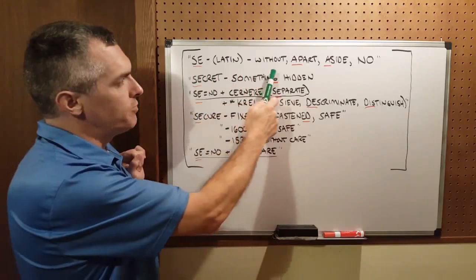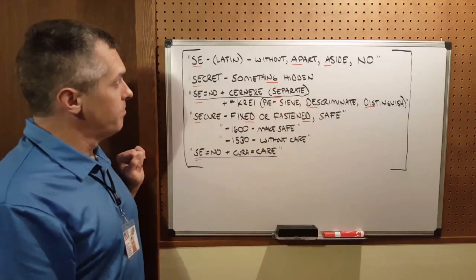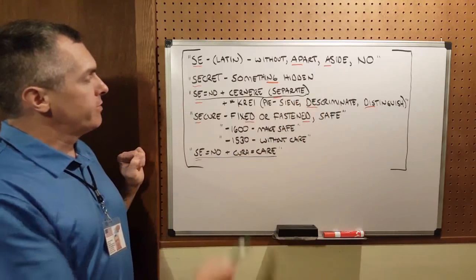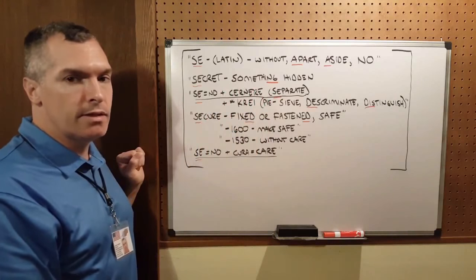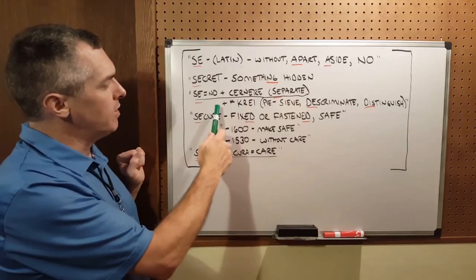In Latin, it means without, apart, aside, i.e. no. So we can take some words like secret, which Google defines as something hidden. That's a paraphrase. S-E means no.